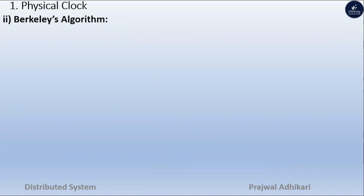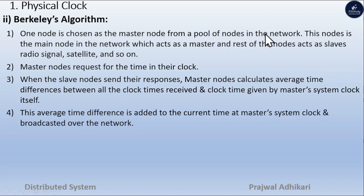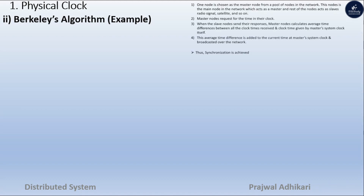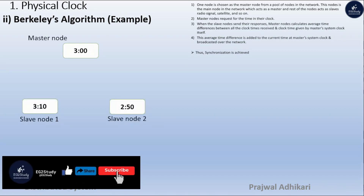Now we will study Berkeley's algorithm. One node is chosen as the master node from a pool of nodes in the network. This master node requests the time from all slave nodes. When the slave nodes send their responses, the master calculates the average time difference between all the received clock values and its own clock. In the example, the master node shows 3:00, slave node 1 shows 3:10, and slave node 2 shows 2:50.